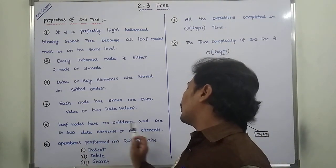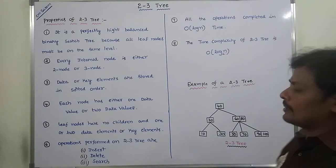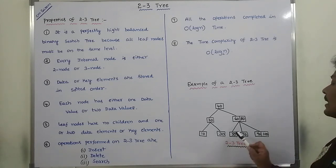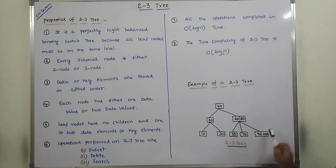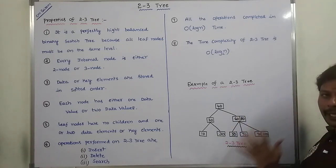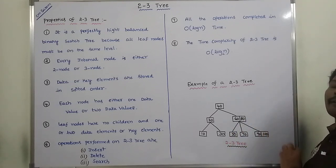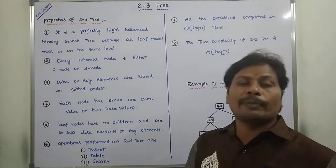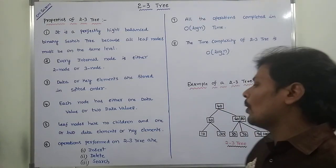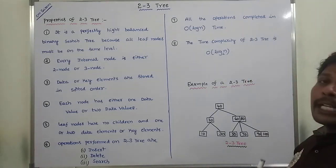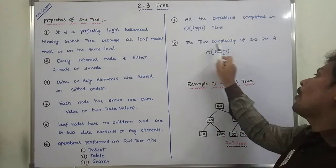The fifth property: leaf nodes have no children and one or two data elements or key elements. All leaf nodes are at the same level, and each leaf node has one or two data elements. The sixth property: operations performed on the 2-3 Tree — insert, delete, and search — can all be performed in O(log n) time. The time complexity of the 2-3 Tree is O(log₂ n).